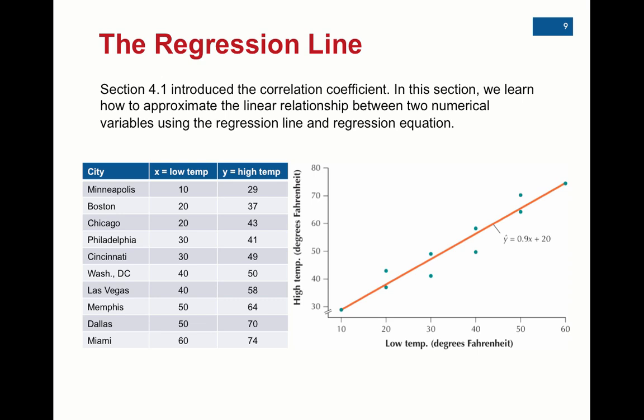Let's say we have the data of low temps and high temps in certain cities on a given day, and we want to see the relationship between those two variables. So x would be the low temp and y would be the high temp. We put up the scatter plot and notice that we have a fairly strong positive correlation. We could put the data into our calculators, and we can come up with this prediction line. We call it y hat. In this case, y hat would equal 0.9 times x plus 20. So 0.9 is the slope and 20 is the y intercept.